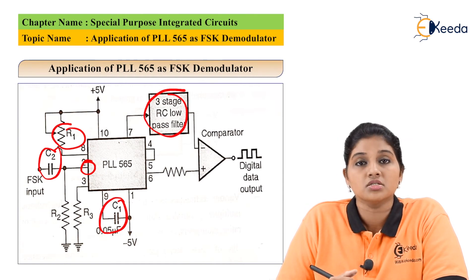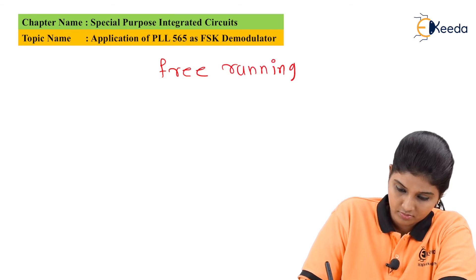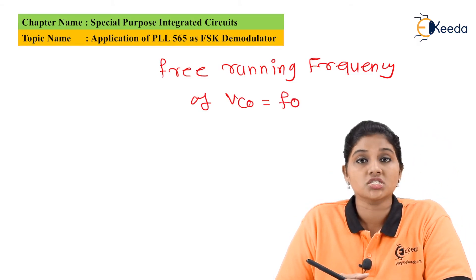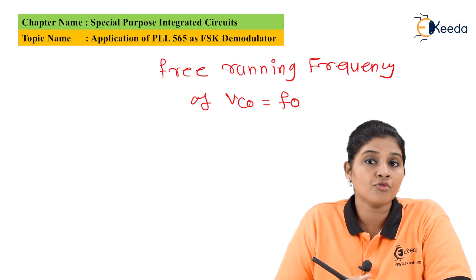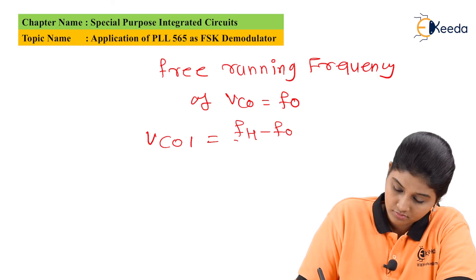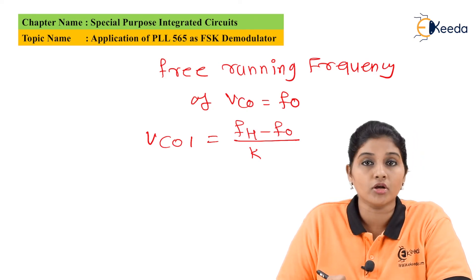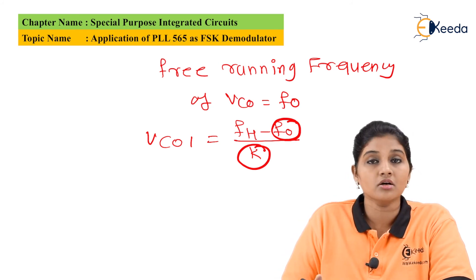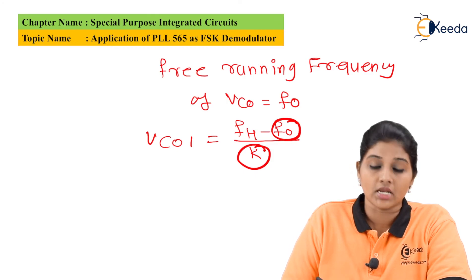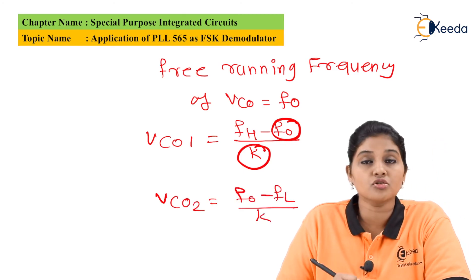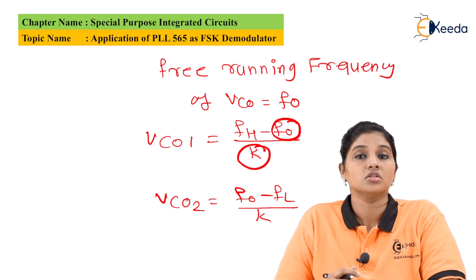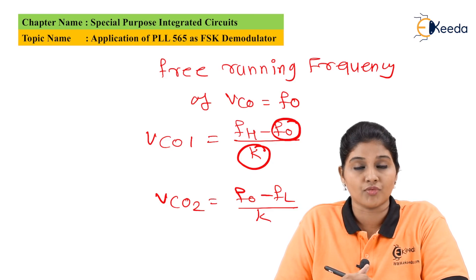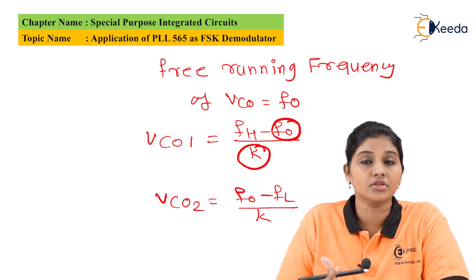The free running frequency of VCO is denoted by F0. In order to obtain the value of FH, which is higher than the free running frequency of VCO, the control voltage VCO1 is given as VCO1 = (FH - F0) / K, where F0 is the free running frequency of VCO and K is the voltage-to-frequency transfer coefficient. Similarly for FL, the control voltage VCO2 is given as VCO2 = (F0 - FL) / K. These voltages are compared internally with the reference voltage, and the corresponding binary data is available at the output with the help of external components.